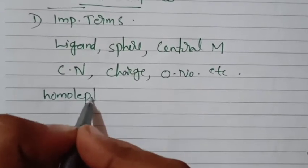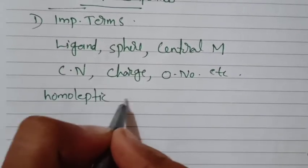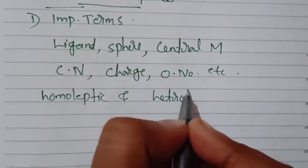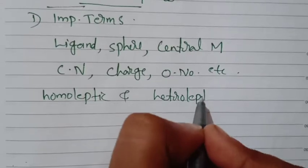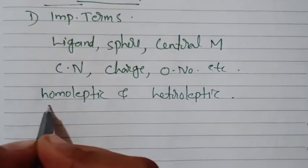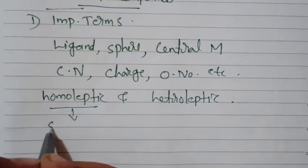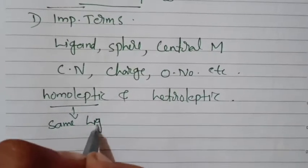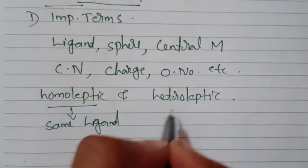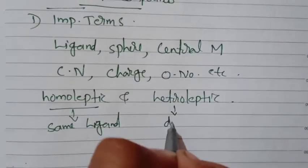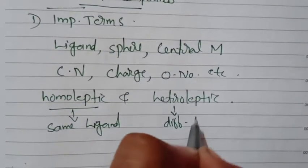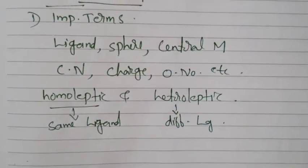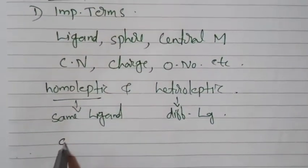The next important terms are homoleptic and heteroleptic complexes — two types of coordination compounds. In homoleptic complexes, there is only one type of ligand, for example NH3 and NH3. In heteroleptic compounds, there are different types of ligands in one compound.